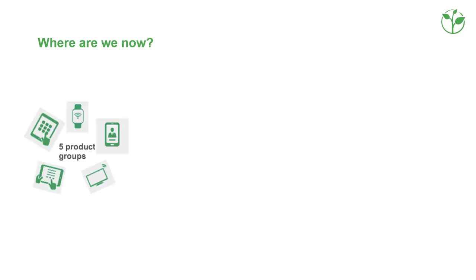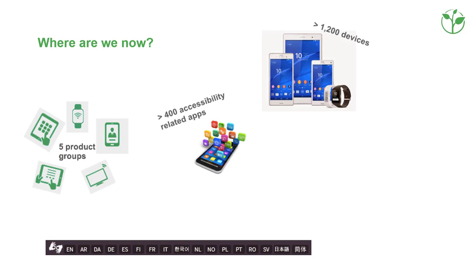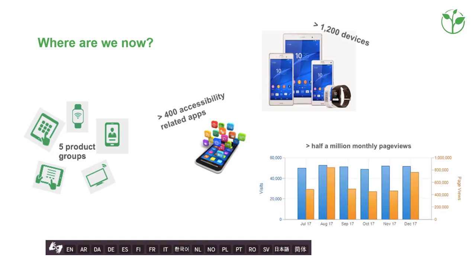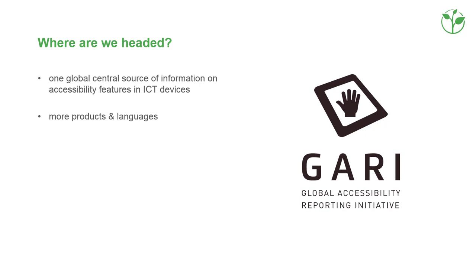GARI today includes 5 product groups, over 1,000 mobile phone models worldwide plus tablets and smart TVs, and over 400 accessibility-related apps, in 17 languages. The site receives over 51,000 visits and over 584,000 page views monthly, based on data from July to December 2017. Our goals for the future include being a global central source of information on accessibility features in ICT devices, expanding to more products and more languages, and encouraging stakeholders to incorporate GARI and become involved in the project.